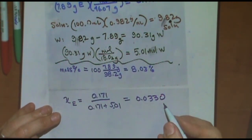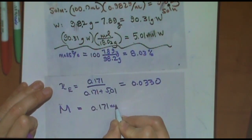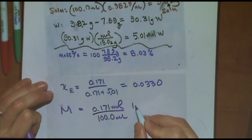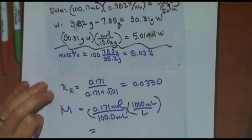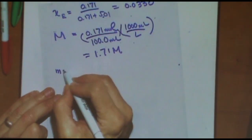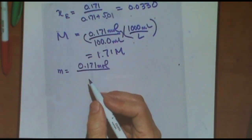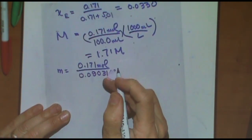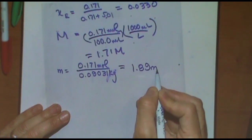Next was molarity, capital M. That's the moles of the solute, 0.171, divided by the total volume, 100 milliliters. I need to change that to liters — that's 1,000 milliliters per liter. And I got 1.71 molar. And finally, the molality — that's the moles divided by the kilograms of the solvent, which is water. And that was 0.09031 — I changed the grams into kilograms, so I had to move the decimal point over. And this turned out to be 1.89 molal, lowercase m.